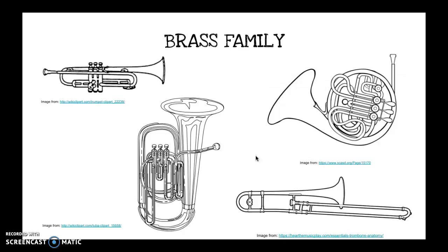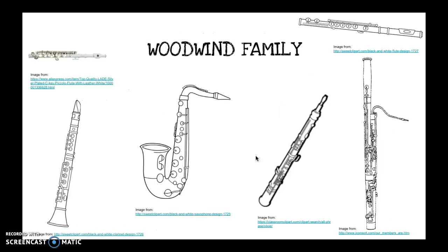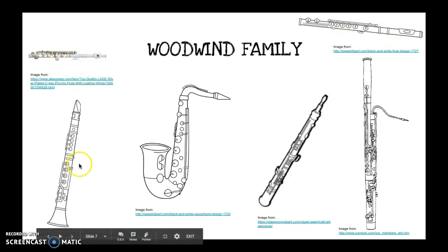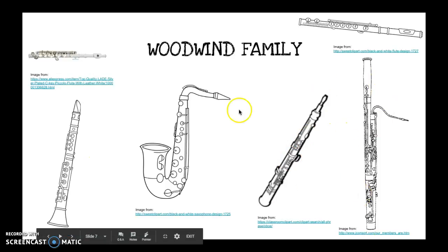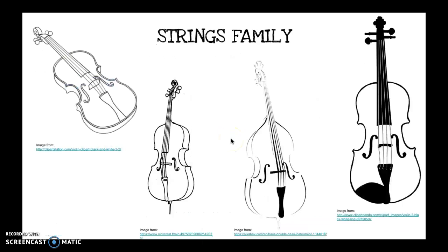You get to use your imagination — be creative. Here's our woodwind family: the piccolo, the flute, the clarinet, the oboe, the bassoon, and sometimes the saxophone in some bands.